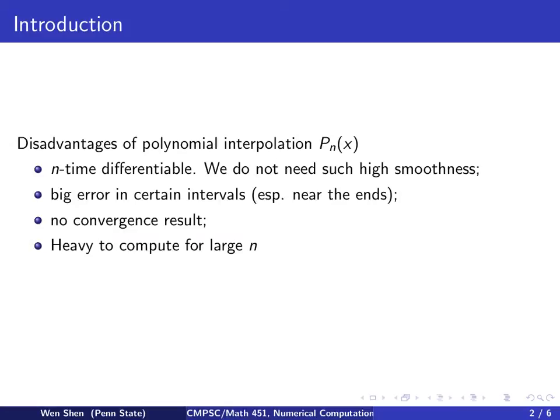We begin by reviewing Chapter 2 and examining some disadvantages of polynomial interpolation. A polynomial of degree n is n-time differentiable, and we often don't need such high smoothness. Furthermore, the error is rather large in certain intervals, especially near the endpoints.